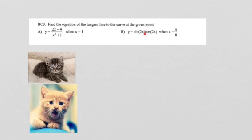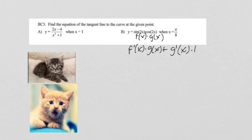The first thing we want to recognize is that this is a product rule problem, and with each piece of the product rule problem, we have a chain rule with the 2x in there.